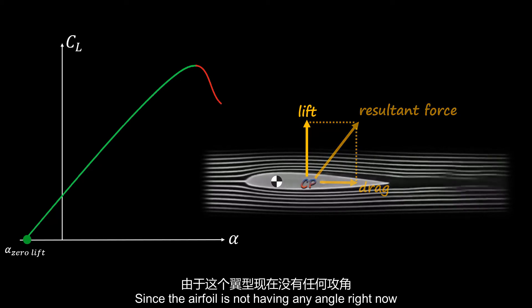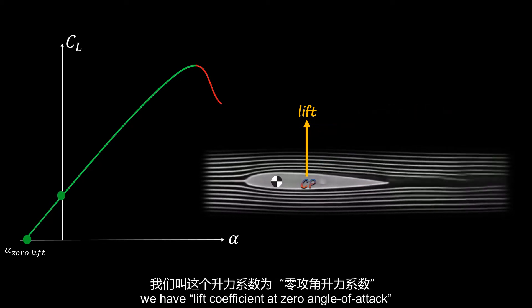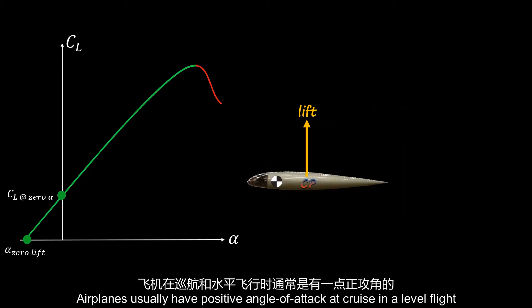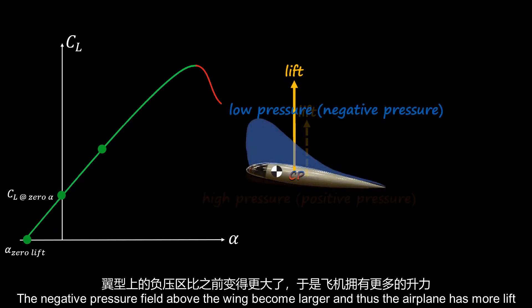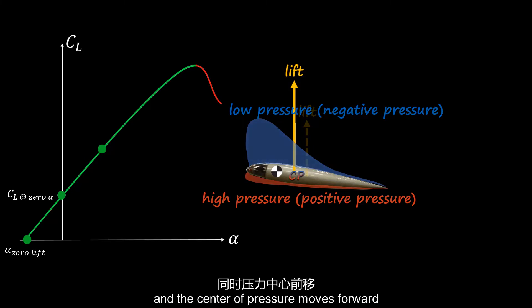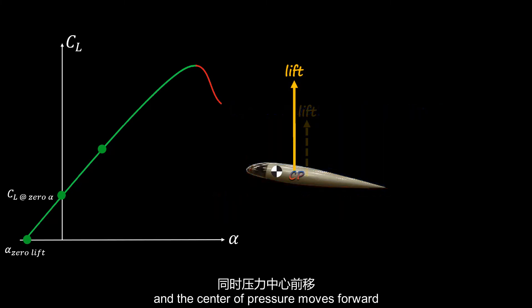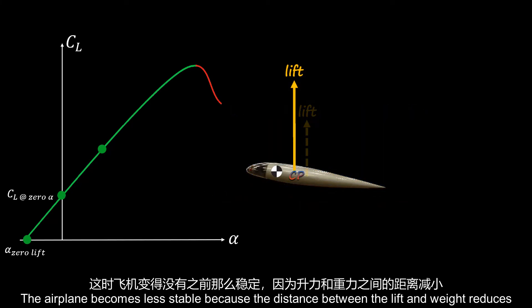Since the airfoil is not having any angle right now, we have the lift coefficient at zero angle of attack. Airplanes usually have a positive angle of attack at cruise in level flight. The negative pressure field above the wing becomes larger, giving the airplane more lift, and the center of pressure moves forward. The airplane becomes less stable because the distance between the lift and weight vectors reduces.